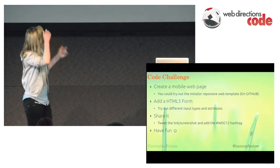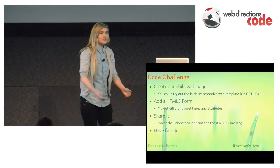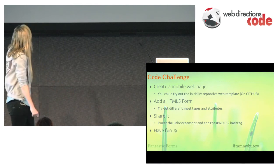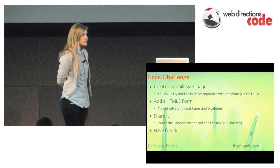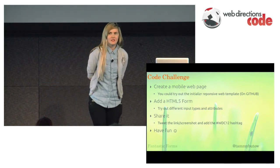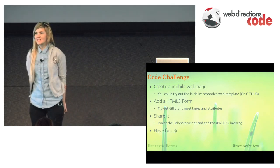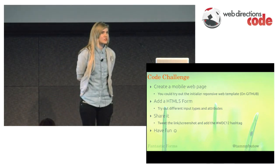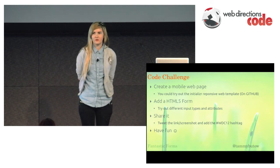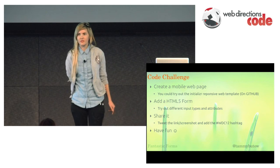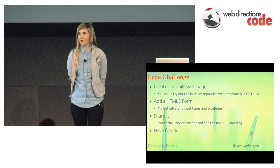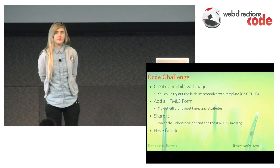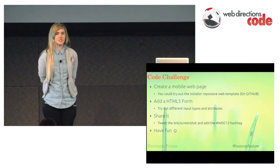The initializer responsive web template — if you haven't tried that out, you could try it. It's on GitHub. Then you could add an HTML5 form by looking at the different input types and attributes and add something cool. I've done a pretty standard demo showing a few different things, but it'd be fun to see something funny or awesome that you've created. You could tweet it or share a photo or screenshot with the hashtag, and I'll go through and look at those and put them together into a blog post — because when I was looking around for really cool examples, I couldn't find anything that awesome.